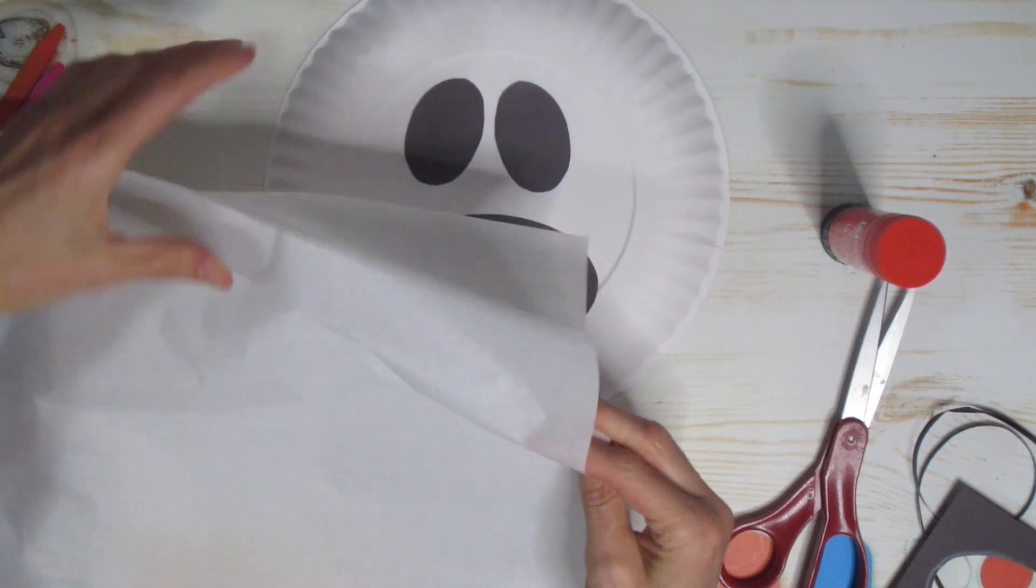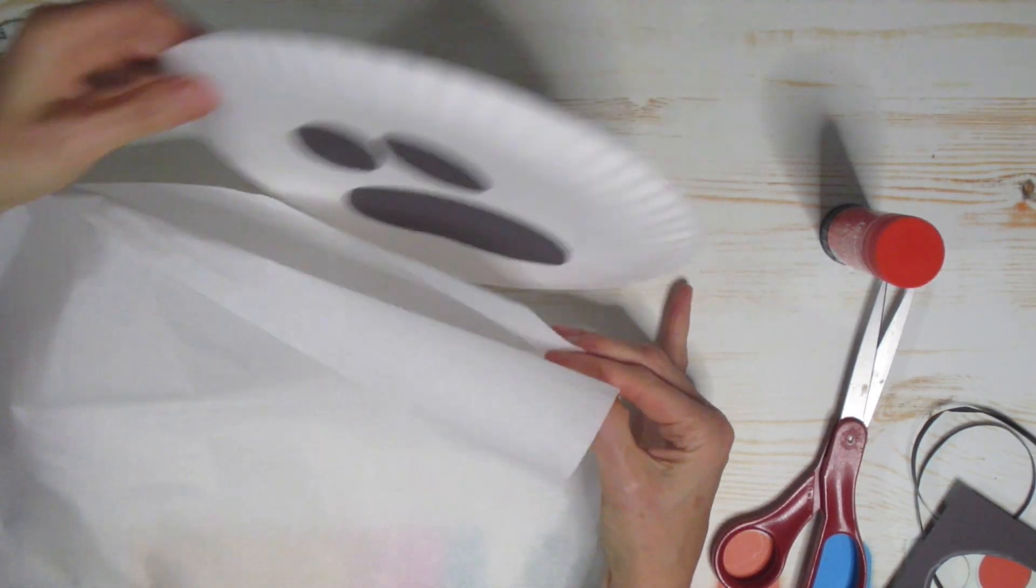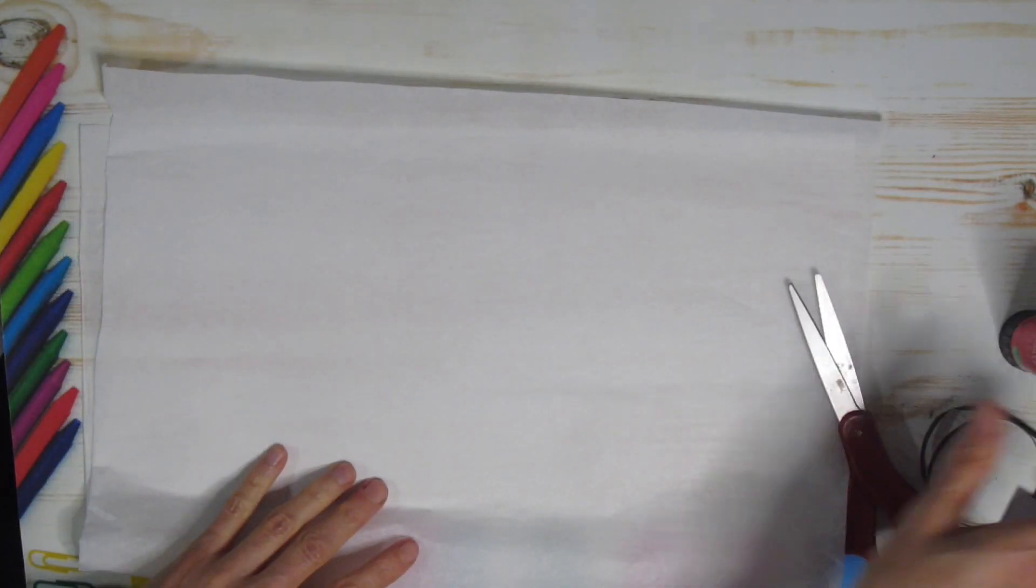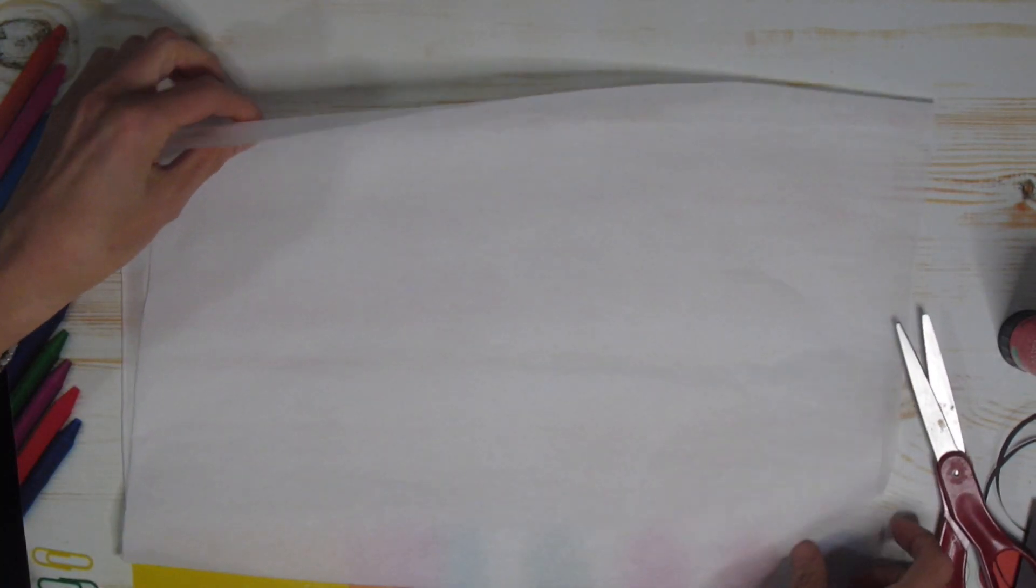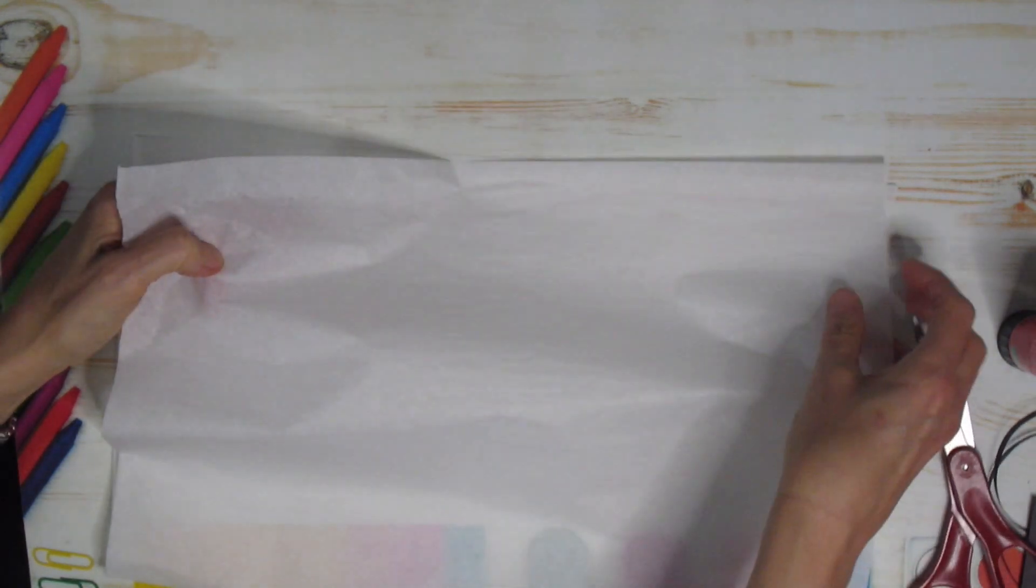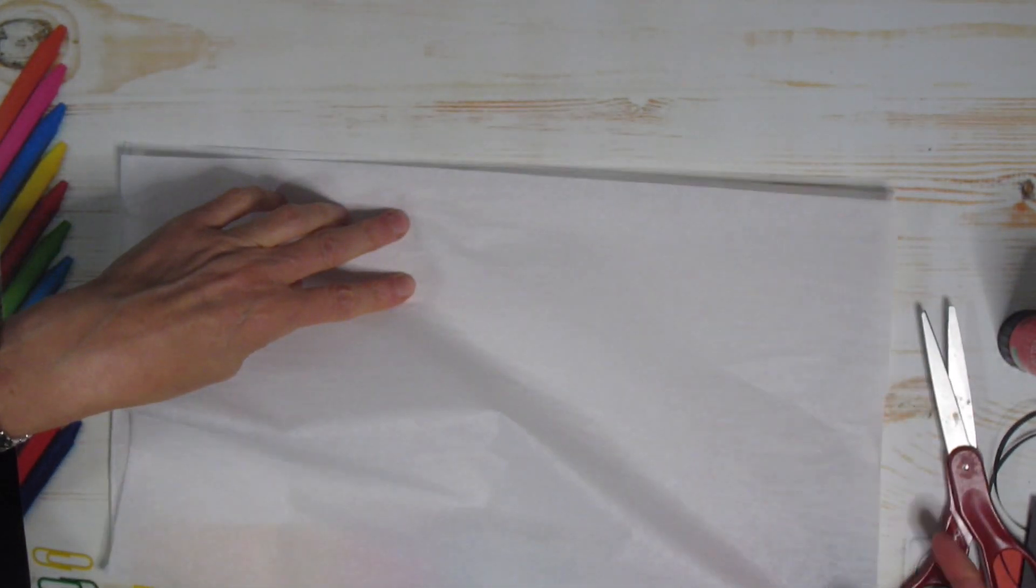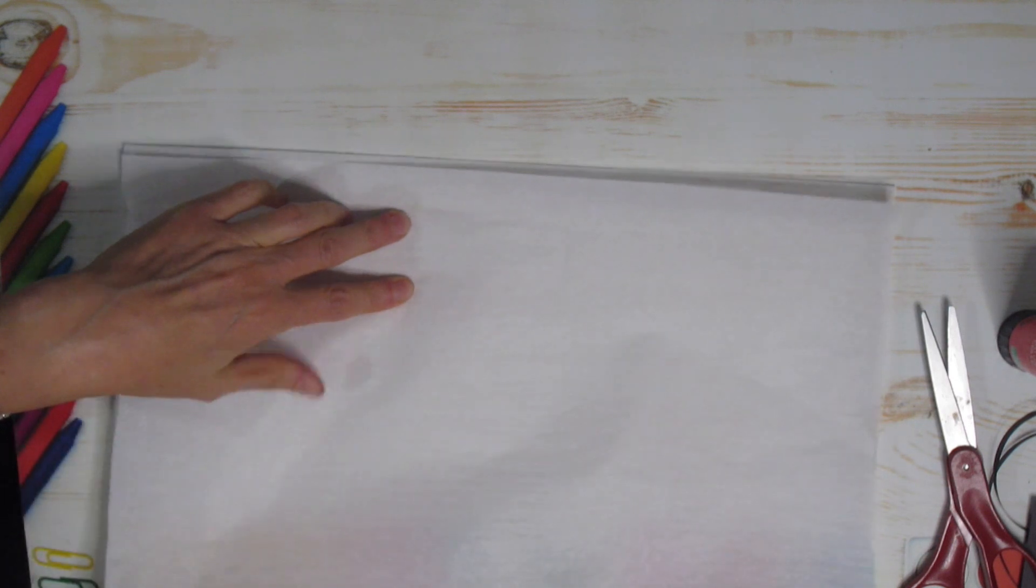Then you're going to take the tissue paper. Now my tissue paper is already folded but I just want to line it up at the top so that when I cut my strips are all the same. So I'm just going to line this up so it all matches right at the top. There we go.